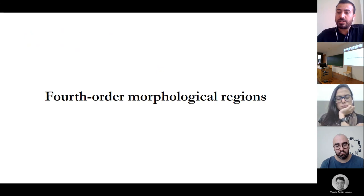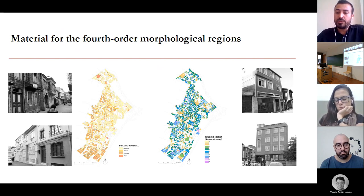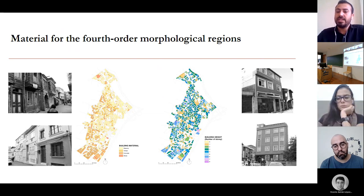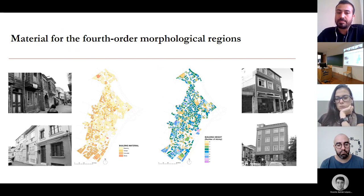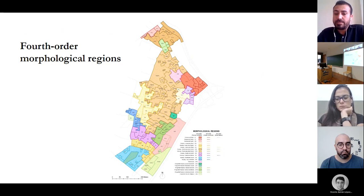Moving to fourth-order morphological regions, building materials and heights are the two fundamental criteria. The map of building materials is categorized into four classes: timber, concrete, masonry, and stone. The map of building height is categorized into eight different classes, ranging from one to eight stories. As in the case of third-order regions, each criterion is applied one by one: first building material, then building height.